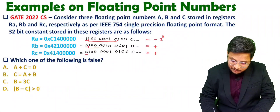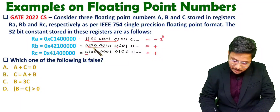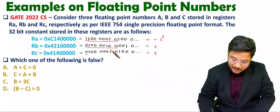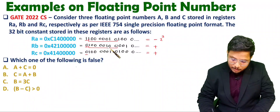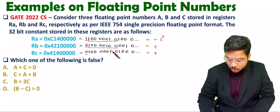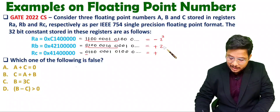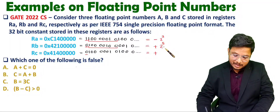Similarly, for RB's 8 exponent bits, the first bit is 128 and then 100 gives 4, so 128 plus 4 is 132. Then 132 minus 127 is 5, so the exponent for B is 2 to the power of 5.